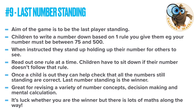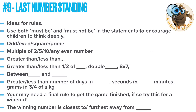Number nine is Last Number Standing. The aim of the game is to be just that — the last player standing. Children write a number down based on one rule you decide to give them, for example their number must be between 75 and 500. Once they've written their number, they stand up and hold it up for everyone else to see on your instruction. You read out one rule at a time, children listen and decide whether their number follows that rule — if it doesn't, they sit down. They can then help you check that everyone still standing has the right answer. This is great for revising a variety of concepts and decision making. You can vary the type of rules: sometimes 'the number must be odd', another time 'the number must not be prime', to deepen their thinking. There are lots of ideas on the screen.